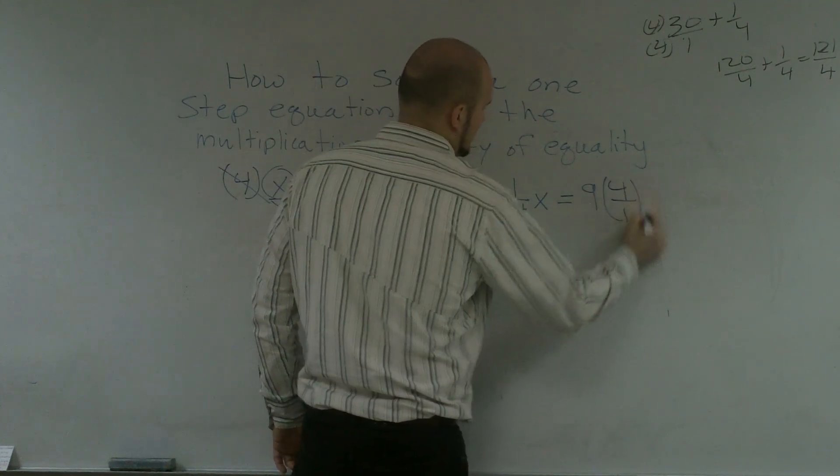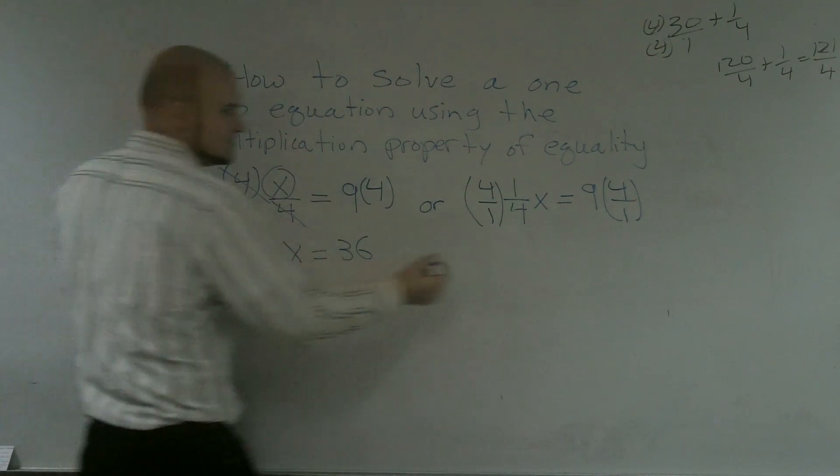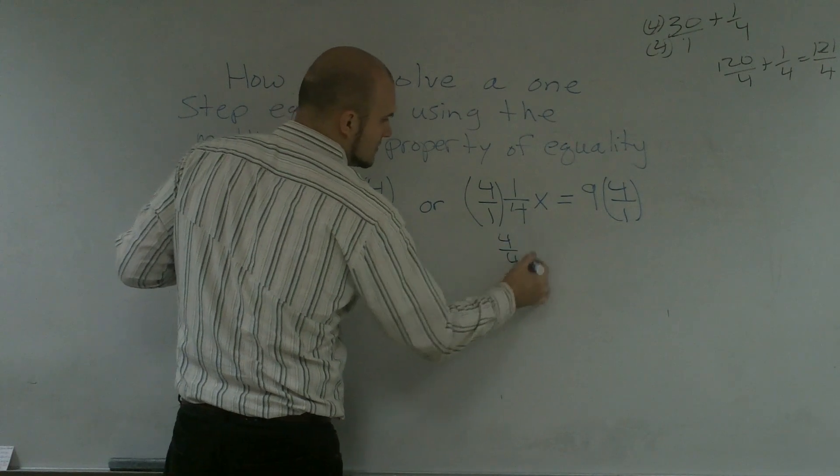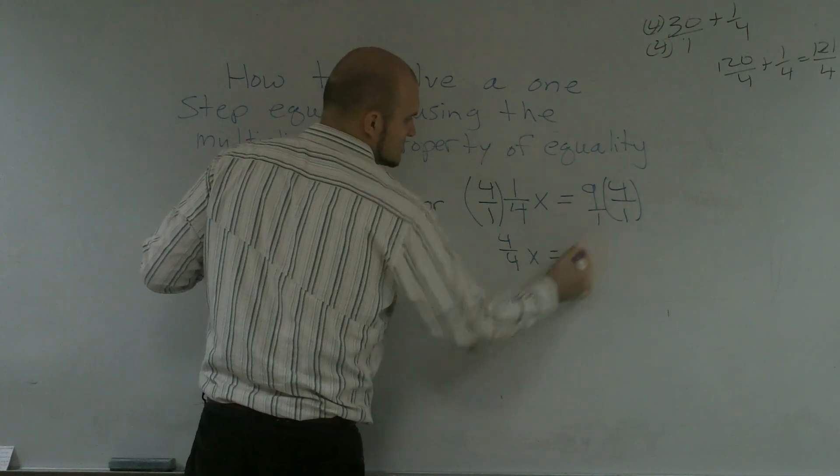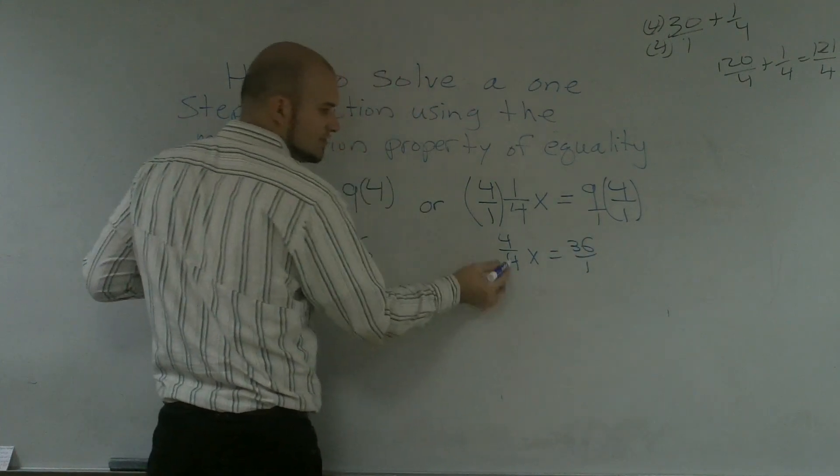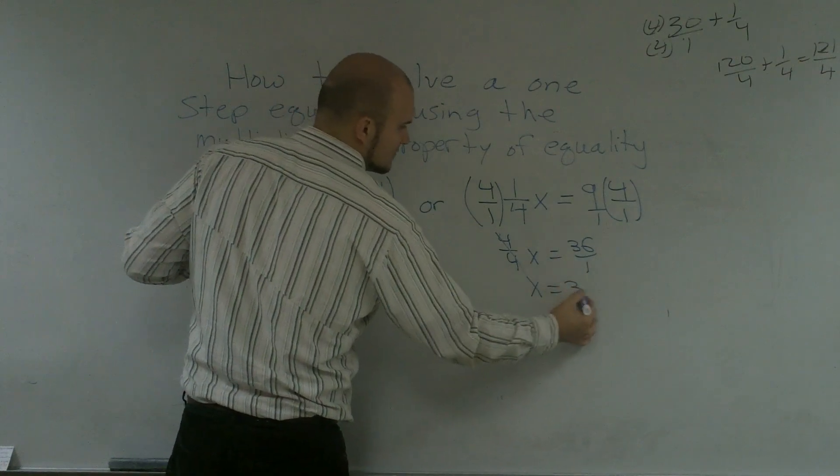my reciprocal is going to give me 4 over 4, which we know is 1, which cancels out, correct? It gives me 4 over 4, x, which equals, I put this over 1, 9 times 4 is 36. 4 over 4 cancels out to 1, x equals 36.